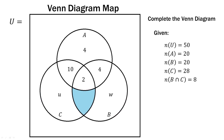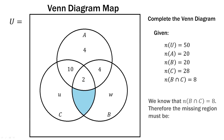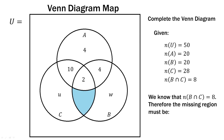Now let's find the missing part of the intersection between B and C, which is V. We're given that the number of elements in B∩C equals 8. Therefore, the missing region must be 8 minus 2, which gives us 6. So that missing piece is 6, and we can verify: 2 plus 6 equals 8.